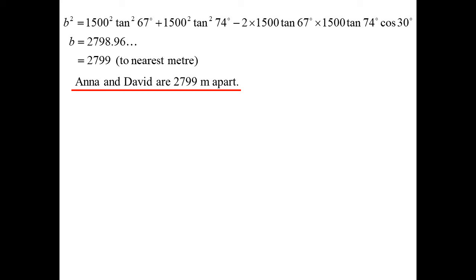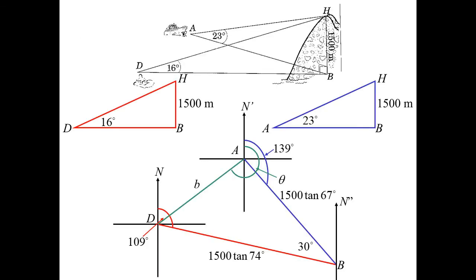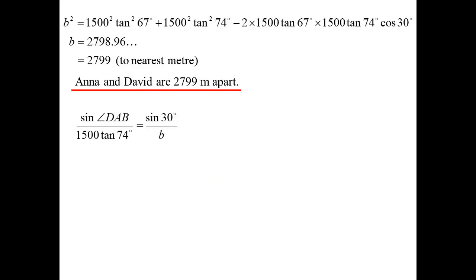OK. We know how far apart they are. Now for the bearing. Well, we know that blue angle we've marked in is 139. If I can find angle B, A, D, add that on, we'll have the bearing that we want. I'm going to use the sine rule. That answer that I got for B, store it in the calculator, because we want to use the exact value, not our rounded off value.